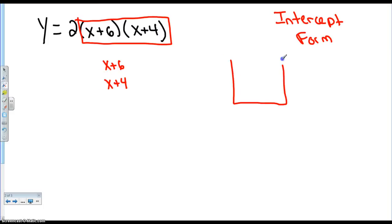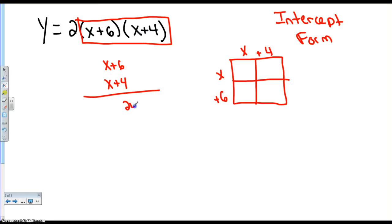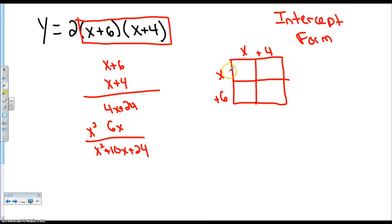A lot of you guys do x plus 6 over x plus 4, or you guys make a box. You put an x, x, and a 4 there and multiply it out. I'll do it both ways. I get 24 — that's 4 times 6. I get 4x and 6x, then x squared. So I get x squared plus 10x plus 24. Doing it the other way: x times x gets me x squared, plus 4x, plus 6x, and 24. Same result: x squared plus 10x plus 24.